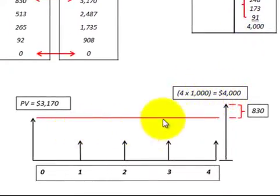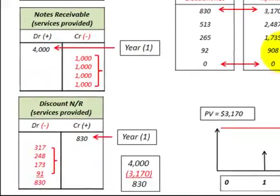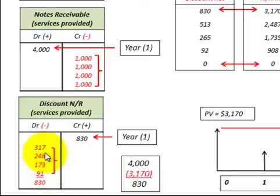We had the $4,000 worth of payments that we received less their present value of $3,170. The difference of $830 is allocated to our interest revenue earned on that notes receivable. Now we have a credit balance in interest revenue that we account for in our discount to notes receivable. That discount is a contra account — it works opposite to notes receivable, reducing it. For those interest payments received each year, we reduce the discount to notes receivable, so at the end of the four-year period we have a zero balance in the discount account: $830 credit versus the $830 debit.